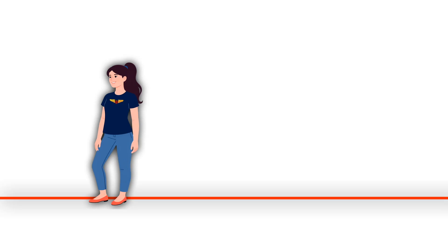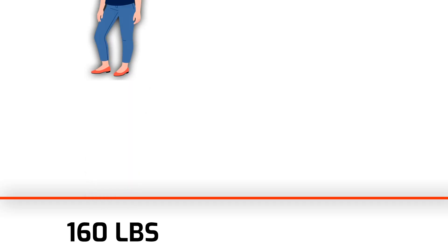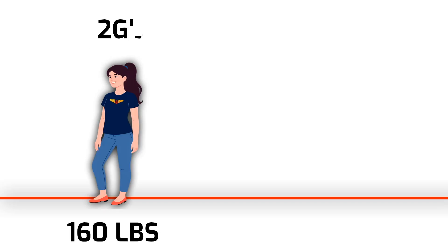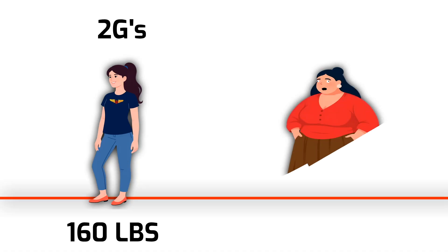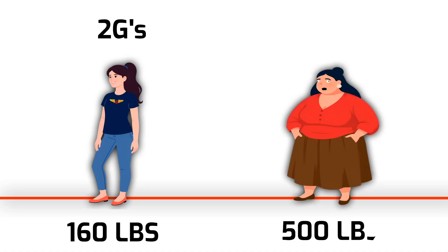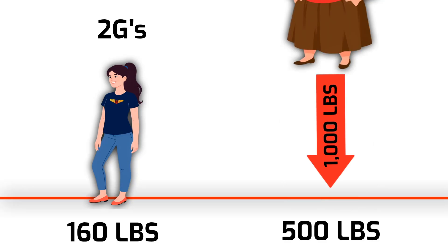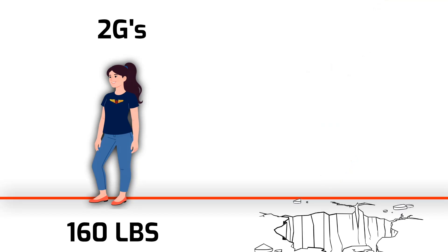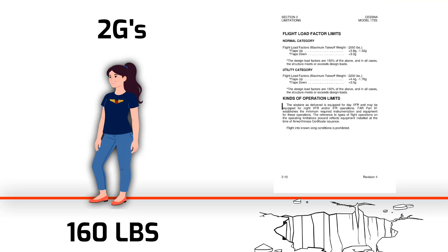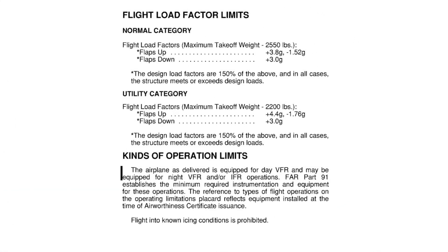Let's say my mom weighs 160 pounds and she jumps up and smacks the concrete at 2 Gs — would she cause more or less damage than someone who weighs 500 pounds doing the same thing? At 2 Gs, the heavier person is creating 1,000 pounds of force. That's why a lighter aircraft can often take on more Gs — your airplane is much lighter in the utility category.